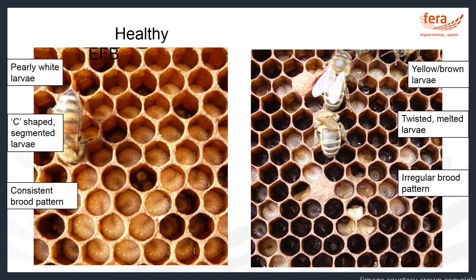When the colony first becomes diseased, only a small number of larvae may be infected, so it might not be as obvious as the example shown in this picture. But if you learn to recognise these symptoms, you can increase your chances of detecting the disease early on, which will improve your chances of successfully treating it and reduce the chance that it will spread to other colonies.